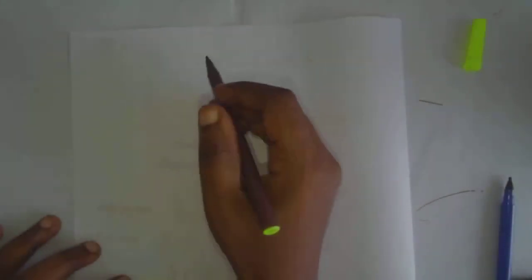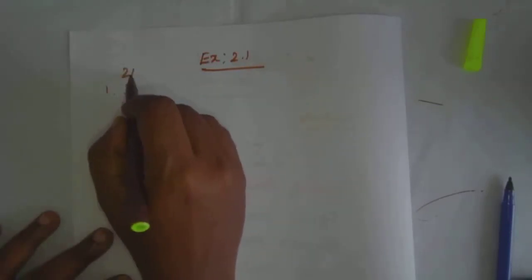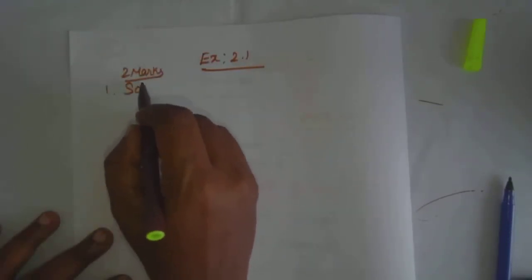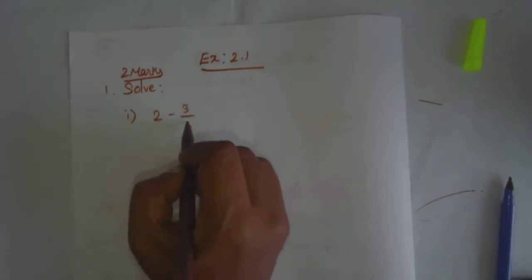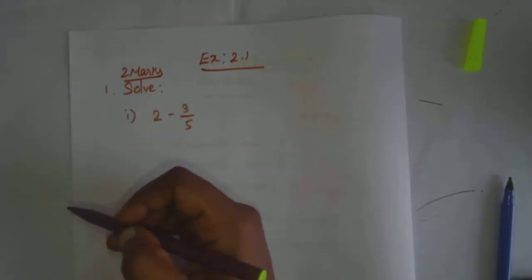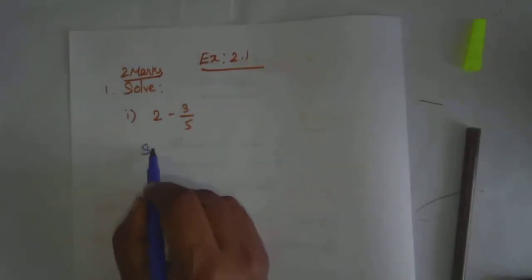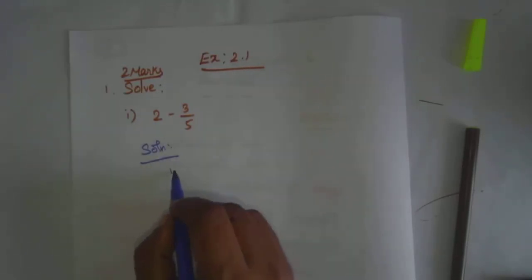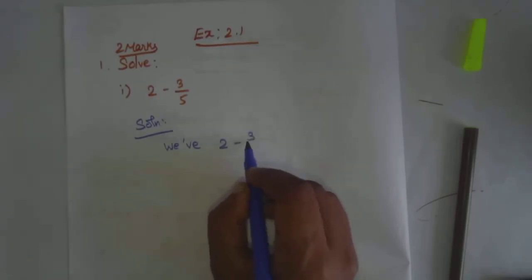Now exercise 2.1. Exercise 2.1. First part is solve. These are all 2 marks. Solve. The first question: 2 minus 3 by 5. Let's see. 2 minus 3 by 5. What we have? We have 2 minus 3 by 5.